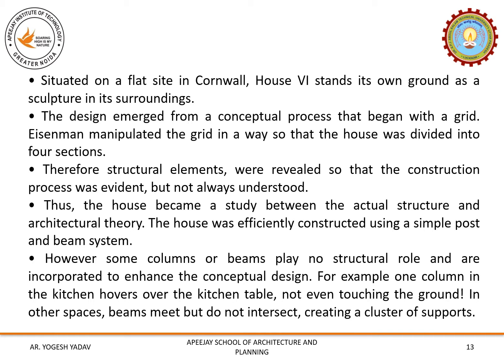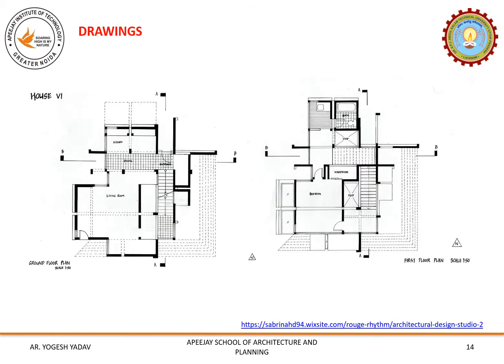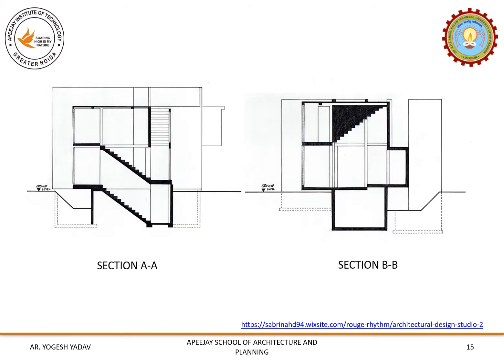The house was efficiently constructed using a simple post and beam system, but some columns or beams play no structural role and are incorporated just to enhance the conceptual design. There is one column in the kitchen which hovers over the kitchen table, not even touching the ground. In other spaces, beams meet but do not intersect, creating a cluster of supports. On the ground floor there is a living room, kitchen and dining area, whereas the first floor has a bedroom and other spaces. We can also see the vertical details of the building and the artificial excavation done to reflect the structure as a sculpture in the site.